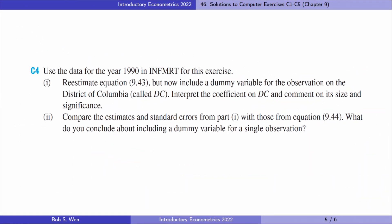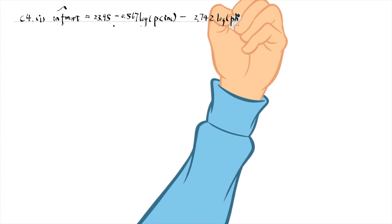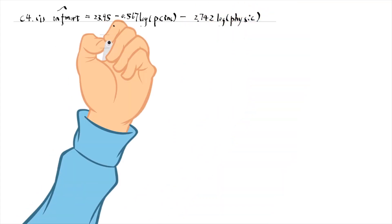Let's find the answer to computer exercise 4. We add the dummy variable indicating DC to the model for part 1. The estimated equation is as follows.